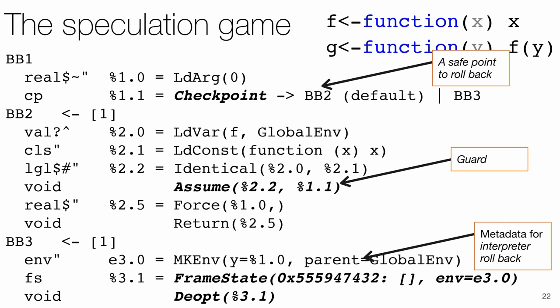The two remaining instructions are used for deoptimization. One of them is a frame state, and it records metadata needed for reconstructing the state of the program at the checkpoint. This includes the appropriate program counter, the contents of the operand stack, and the environment which is needed by the unoptimized code. The last instruction is an unconditional deoptimization point that using the frame state passes control to the correct place in the unoptimized R interpreter.